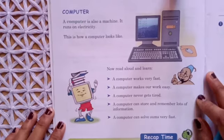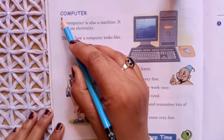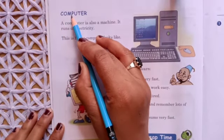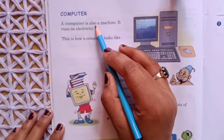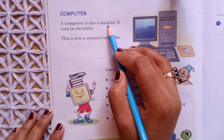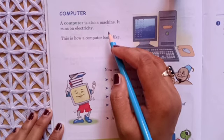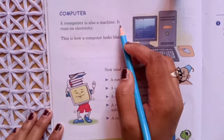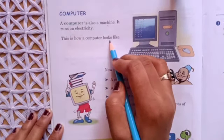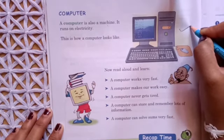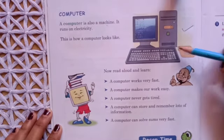Now we are going to learn about a computer — what is a computer? The spelling of computer is C-O-M-P-U-T-E-R. A computer is also a machine. It runs on electricity and does our work very quickly and easily. This is how a computer looks. It has four parts: monitor, CPU, mouse, and keyboard.